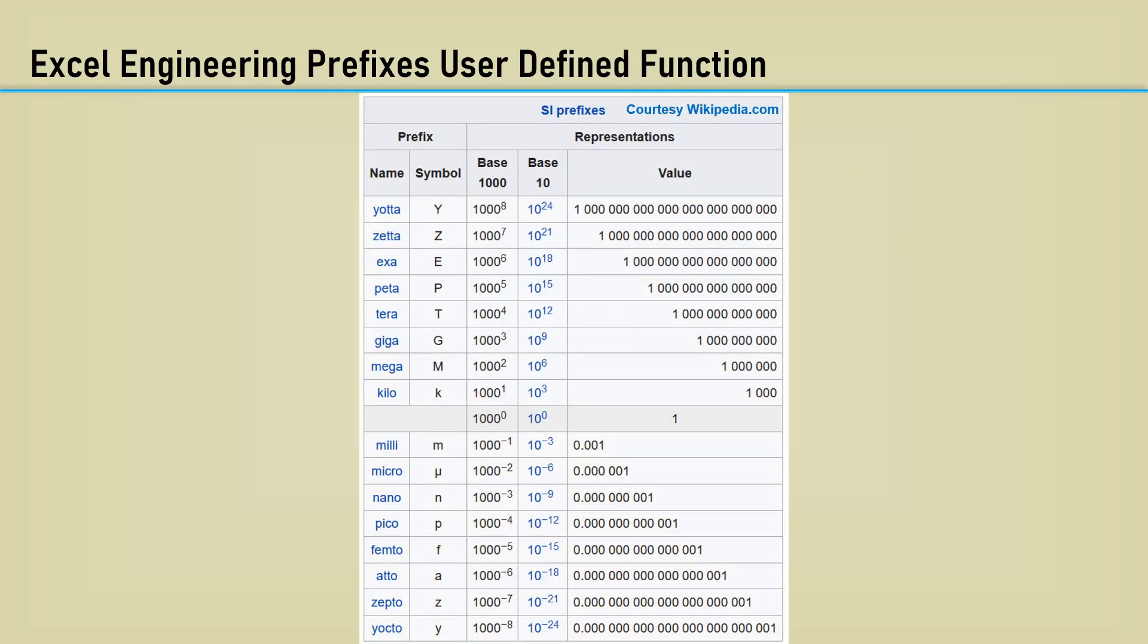In an earlier video, we created VBA code to return the applicable SI prefix for a numeric input argument. We exploited the fact that each prefix level is a base 1000 number with an exponent.